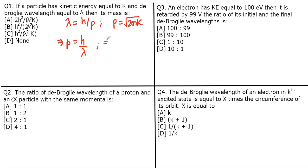You will get mass = p²/(2K). Now substitute p here to get the final expression of mass, which is m = h²/(2λ²K).